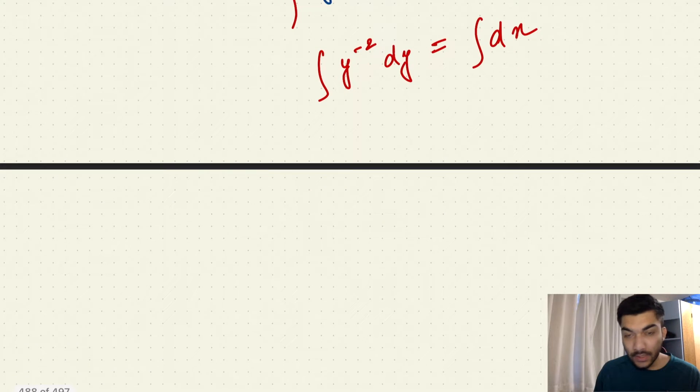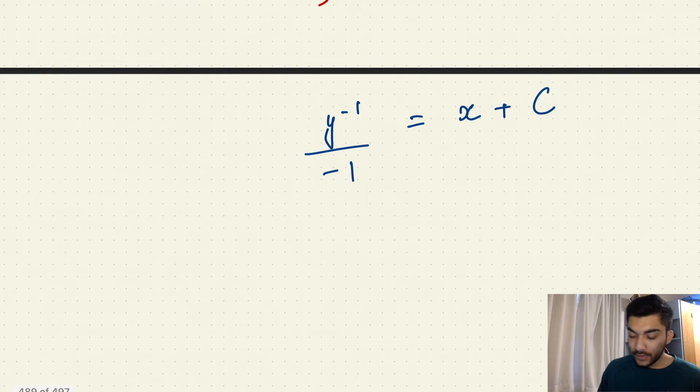And then if we solve these integrals, these are very easy integrals. So this integral would be y to the power minus 1 upon minus 1, and this would be basically x plus the constant of integration.